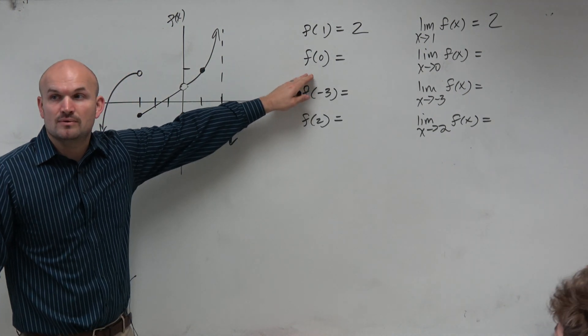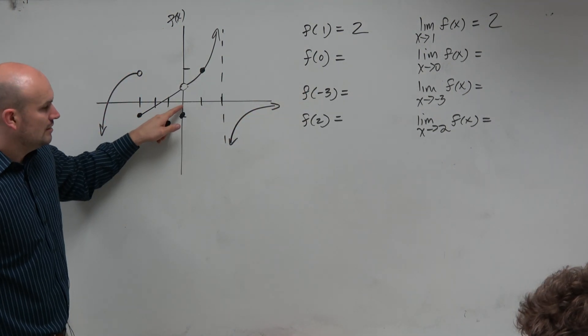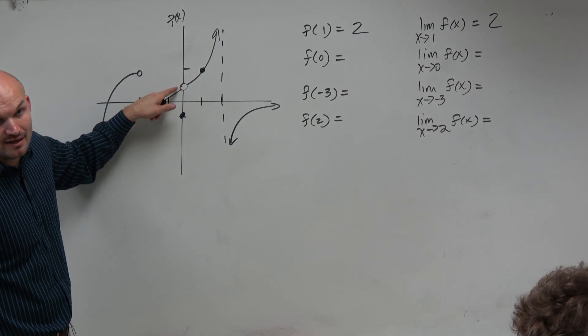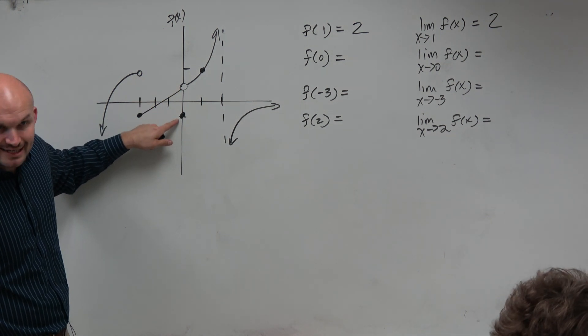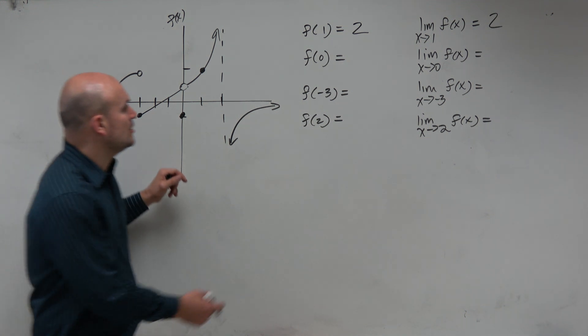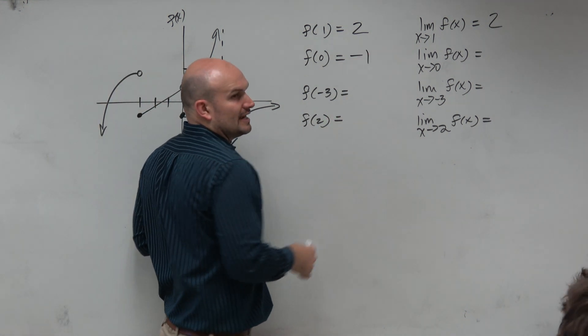Let's look at the next one, f of 0. We go to f of 0, and we notice there's a hole. So we obviously know that it's undefined there, but there is a dot here that is being in replacement of that. So therefore, at f of 0 is equal to negative 1.